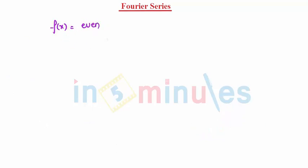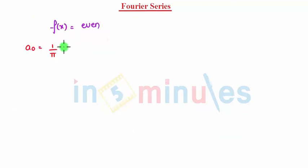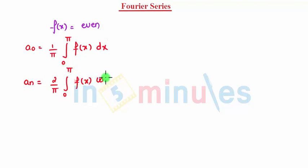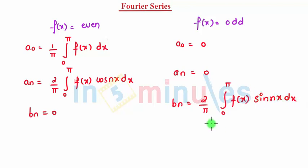So it's very easy: when the function is even, a0 is 1 by pi from 0 to pi of f(x) dx, an is 2 by pi from 0 to pi of f(x) cos(nx) dx, and bn is 0. Whenever there is a range of minus pi to pi, we check if the function is even or odd and work accordingly. Thank you for watching In 5 Minutes.